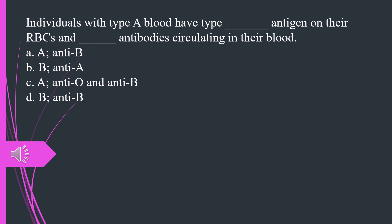Individuals with type A blood have type what antigen on their RBCs and what antibodies circulating in their blood. A. A, anti-B B. B, anti-A C. A, anti-O and anti-B D. B, anti-B. The answer is A, type A antigen, anti-B.